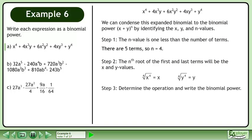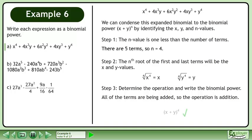In step 3, determine the operation and write the binomial power. All of the terms are being added, so the operation is addition. The binomial power is x plus y raised to the power of 4.